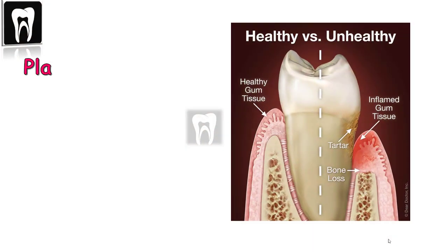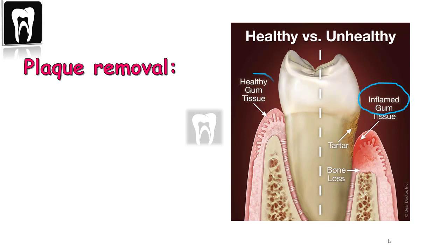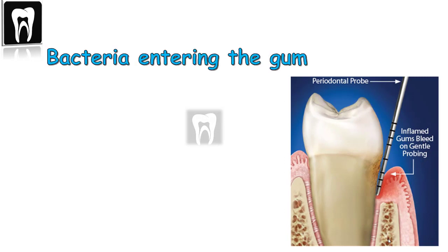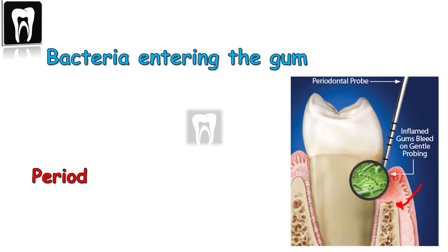If the calculus and plaque are removed, gingivitis is reversible and goes away. But if gingivitis is left untreated, the bacteria from the plaque can enter the bloodstream and gum, and it can progress and spread to the underlying bone and tissues — which results in periodontitis.